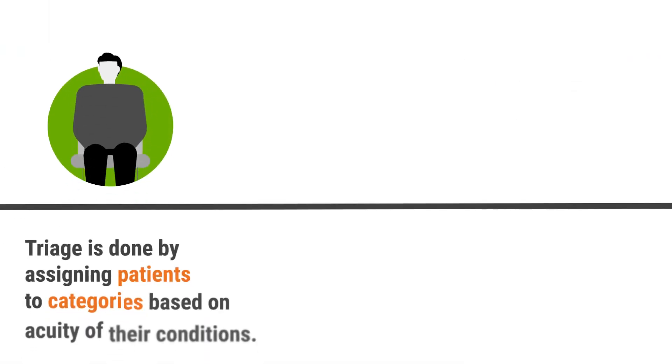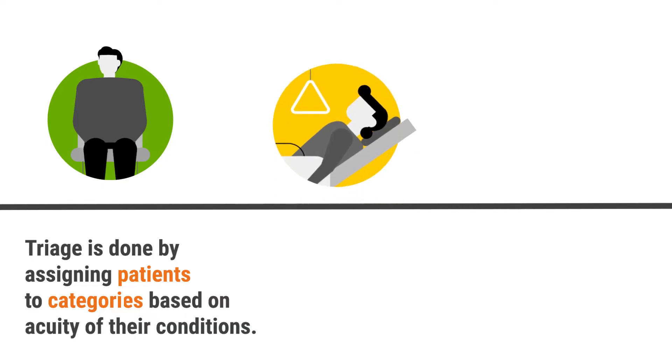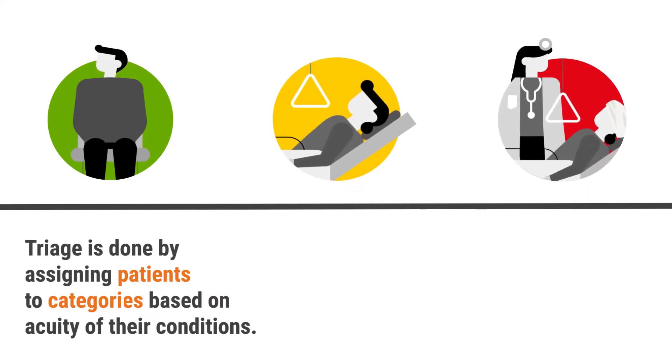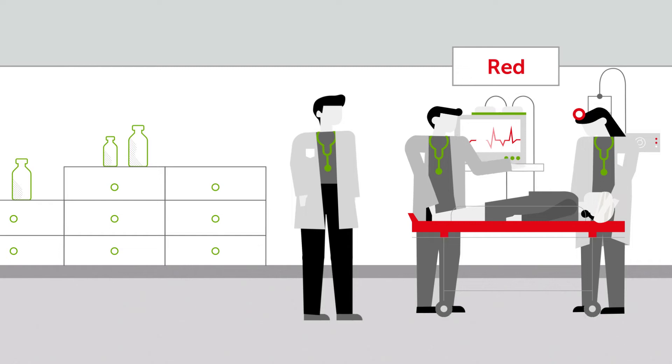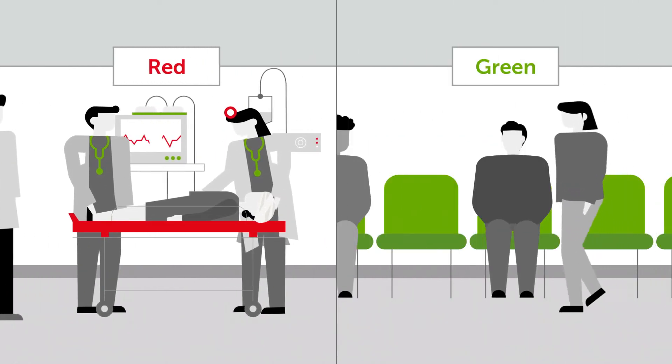Triage is done by assigning patients to categories based on acuity of their conditions. Some patients need to be seen immediately, while other patients may safely wait.